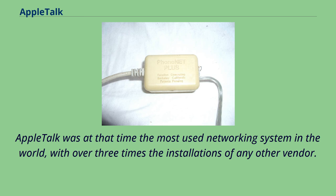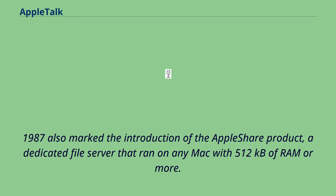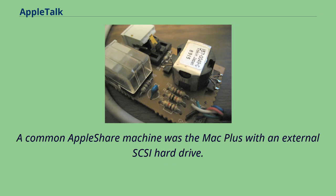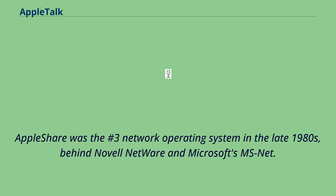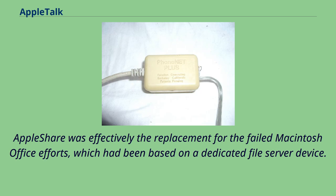1987 also marked the introduction of the AppleShare product, a dedicated file server that ran on any Mac with 512 kilobytes of RAM or more. A common AppleShare machine was the Mac Plus with an external SCSI hard drive. AppleShare was the number three network operating system in the late 1980s, behind Novell NetWare and Microsoft's MSNet, and was effectively the replacement for the failed Macintosh Office efforts.